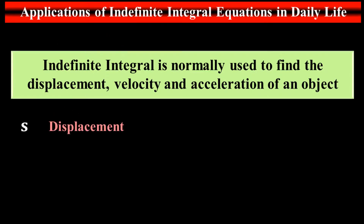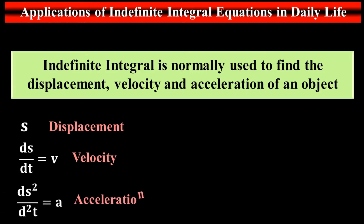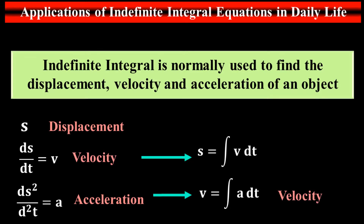S stands for displacement. The derivative of displacement with respect to time equals velocity, and the derivative of velocity equals acceleration — which is also the second derivative of displacement. On the other hand, the integral of acceleration equals velocity, and the integral of velocity equals displacement. You can see that the derivative and integration play opposite roles here.